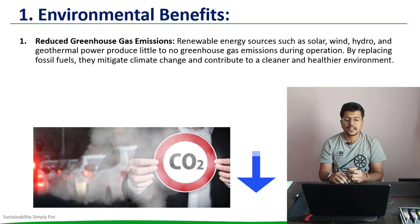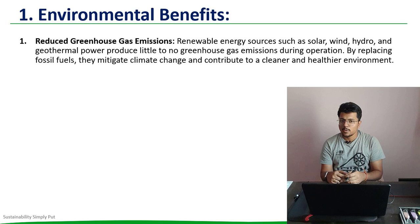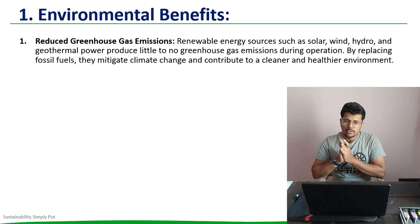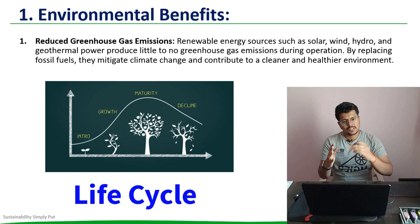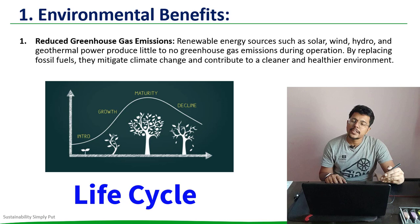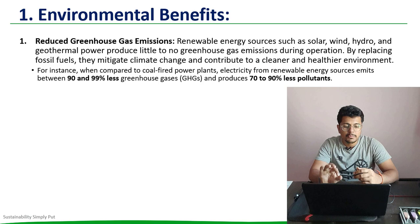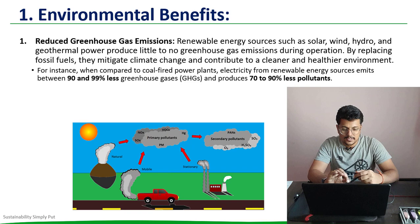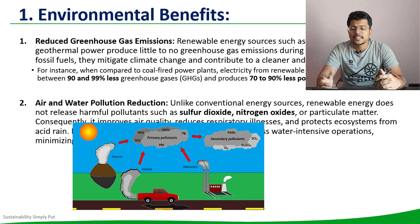Some people might ask about the waste generated by solar panels or wind turbines. Using overall life cycle thinking — from cradle to cradle, from scratch until the point where it becomes waste and disintegrates into nature — compared to a coal-fired power plant, electricity produced from renewable energy sources emits 90 to 99% less greenhouse gases and produces 70 to 90% less pollutants.